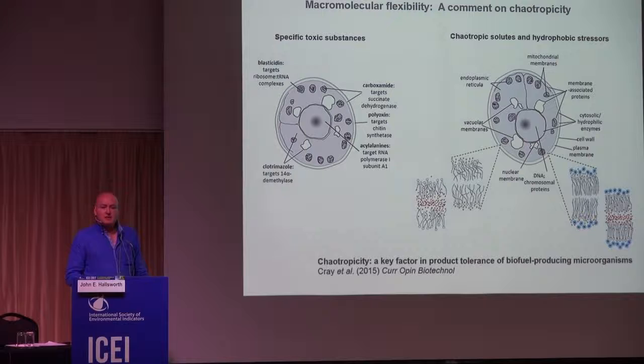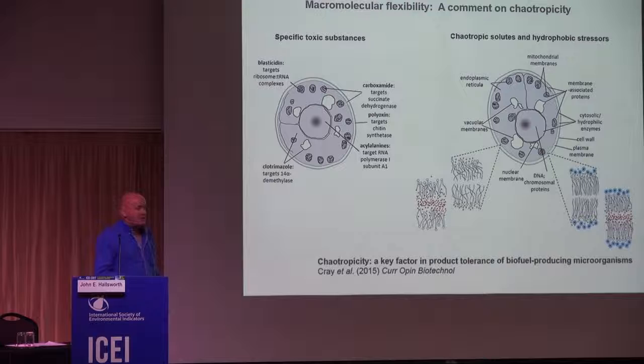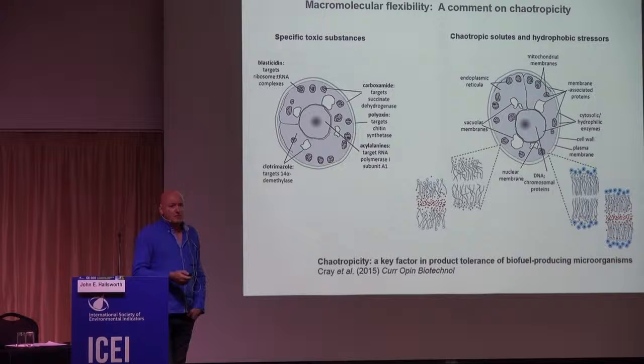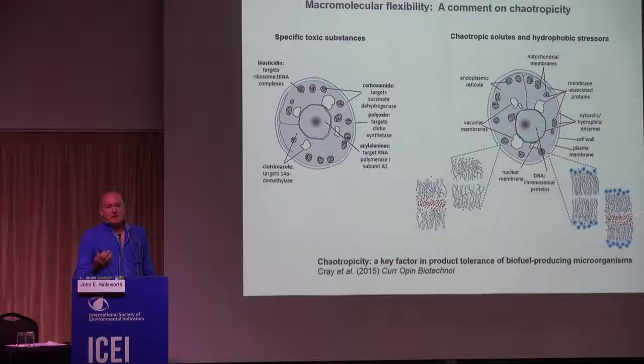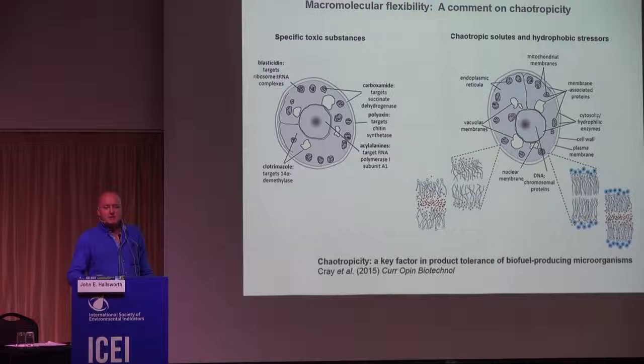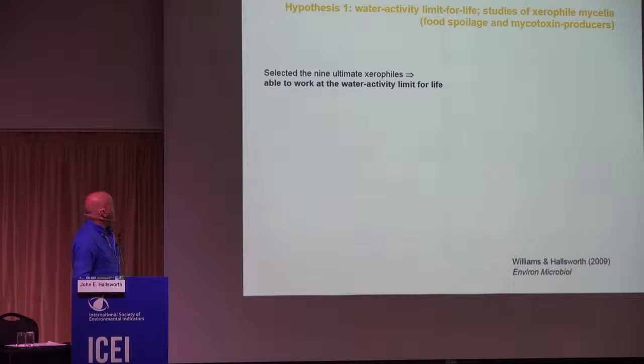Chaotropes are well known to chemists, but bizarrely, biologists hadn't noticed that chaotropes behave as chaotropes in vivo, in the cell and in biological systems. At that time I published a review called 'ethanol-induced water stress in yeast,' and more recently wrote an article on 'chaotropicity: a key factor in product tolerance of food-producing microbes.' All cells have intracellular metabolites and extracellular solutes, and all solutes are more or less polar than water — they either have a potential disordering effect or a stabilization effect on the macromolecular system.